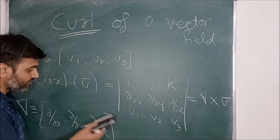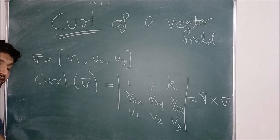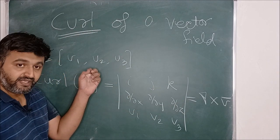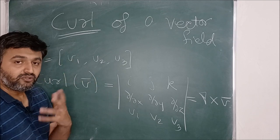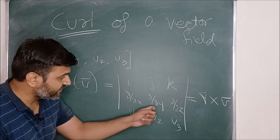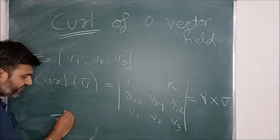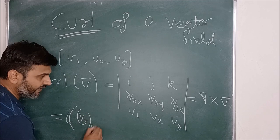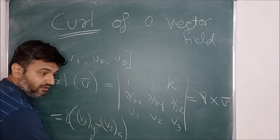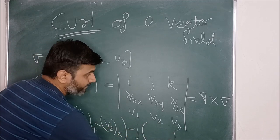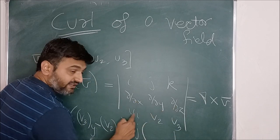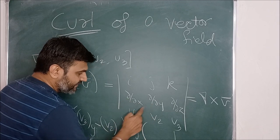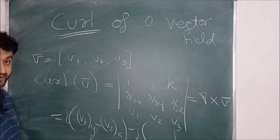The output is again a vector, so curl takes a vector as input and gives a vector as output. One important assumption is that this must be a continuously differentiable vector field, since we are taking derivatives. The explicit formula is: i·(∂V3/∂y − ∂V2/∂z) − j·(∂V3/∂x − ∂V1/∂z) + k·(∂V2/∂x − ∂V1/∂y).